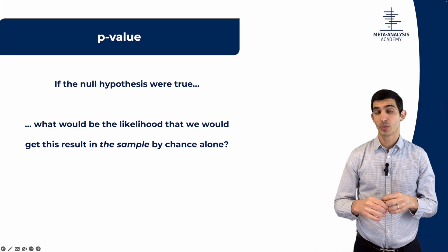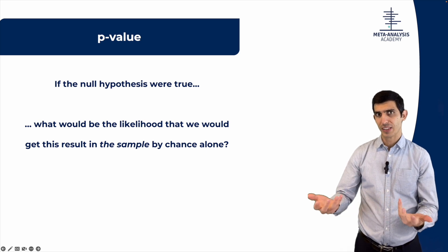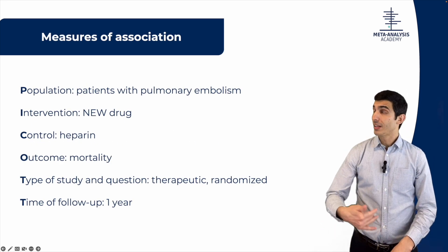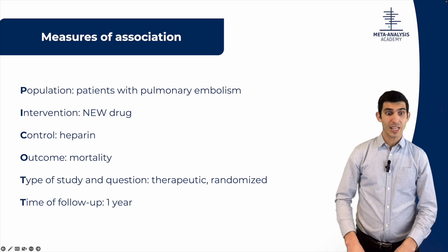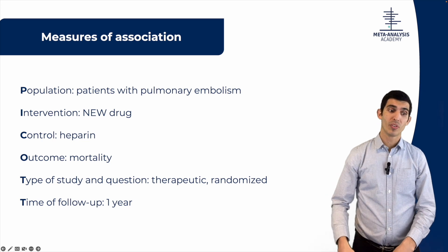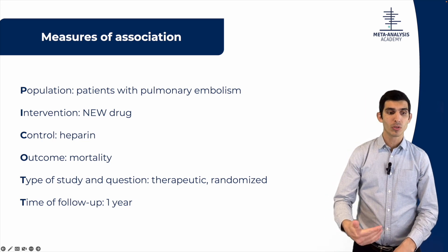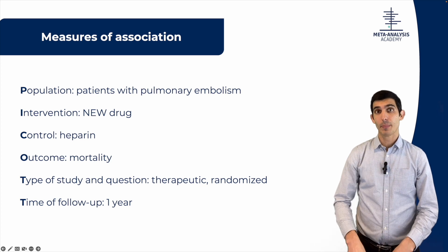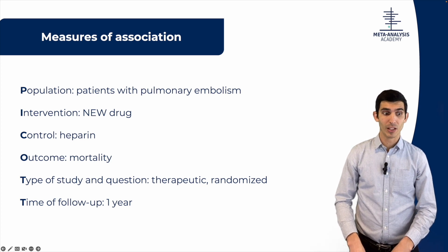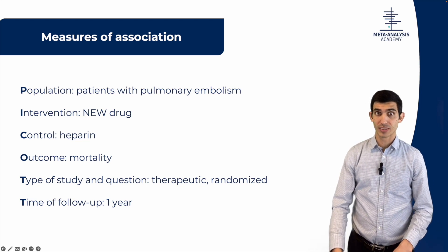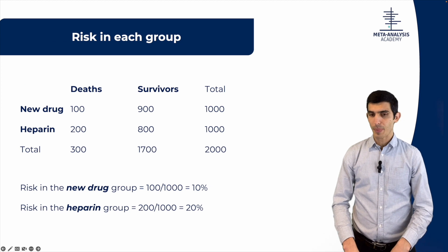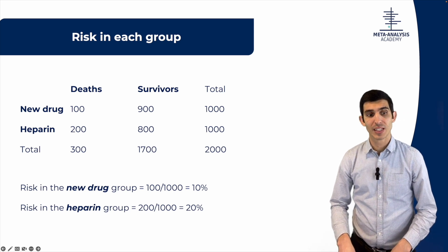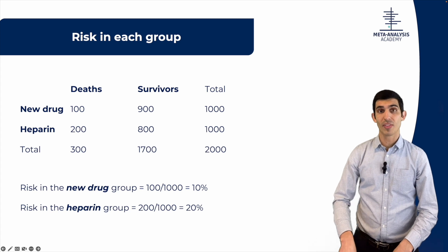So the P-Value says: if there truly is no difference between the two groups — if the null hypothesis is truly true — then what would be the likelihood that we would get such a result as we got in the sample, by chance alone? Because if in the population there's no difference between groups, what would be the likelihood that we would find this particular difference between the two groups in the sample? So let's go over an example so that this becomes clear. In patients with pulmonary embolism who are treated with a new drug versus heparin, the outcome is mortality, and this is a randomized controlled trial that follows patients up to one year.